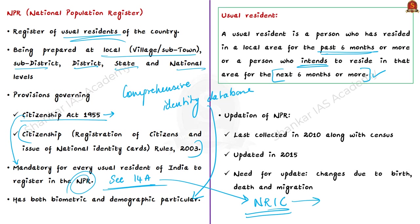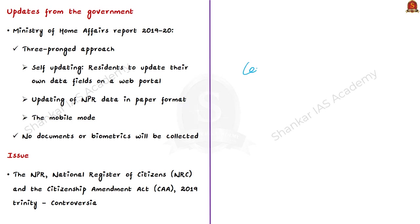NPR creation is the first step towards preparation of the NRIC. Since NRIC is compulsory under the Citizenship Act, NPR — as its first step — is also compulsory. This is not the first time data for NPR has been collected: data was collected in 2010 along with the house listing phase of Census of India 2011, then updated in 2015 through a door-to-door survey. The current collection is to further update the NPR to incorporate changes due to birth, death and migration. Before the pandemic hit, it was decided to update NPR along with the house listing phase of Census 2021, to be conducted during April to September 2020 in all states and UTs except Assam.